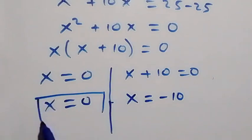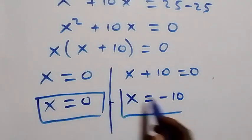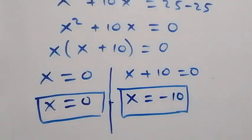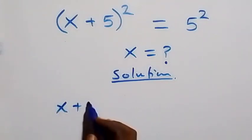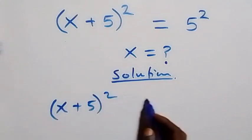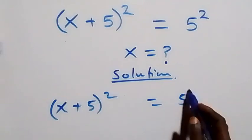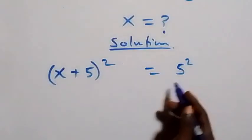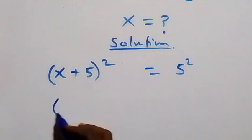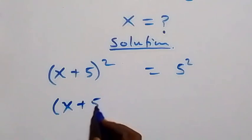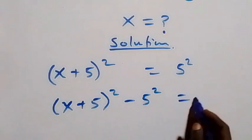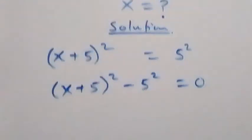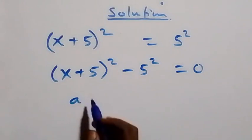Now let's use another method. What is given is (x + 5)² equals 5². Let's take 5² to the left-hand side, so we have (x + 5)² minus 5² equals zero.